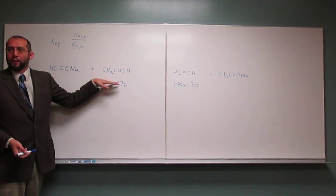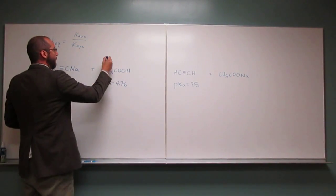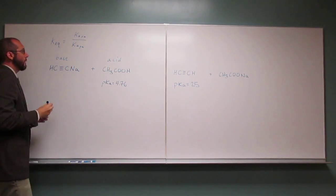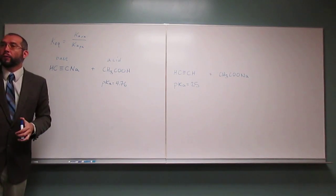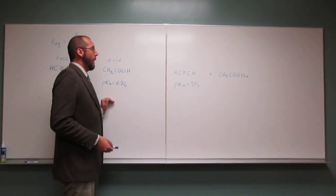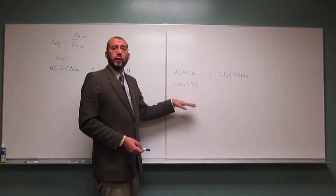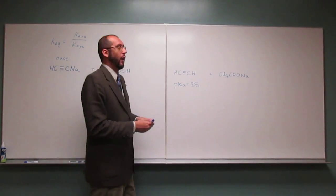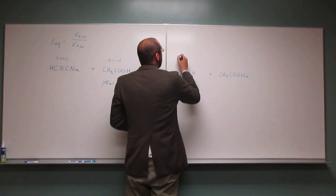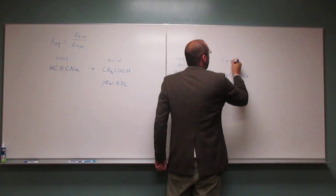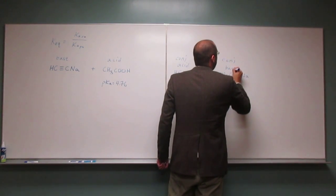So hopefully by now you've figured out that this is acetic acid which is the acid. Acid base. It might be helpful to go to the other side and write in conjugate acid and conjugate base. The same thing should be obvious to you that this is the acid due to the fact that it's got a pKa value. So conjugate acid and conjugate base.